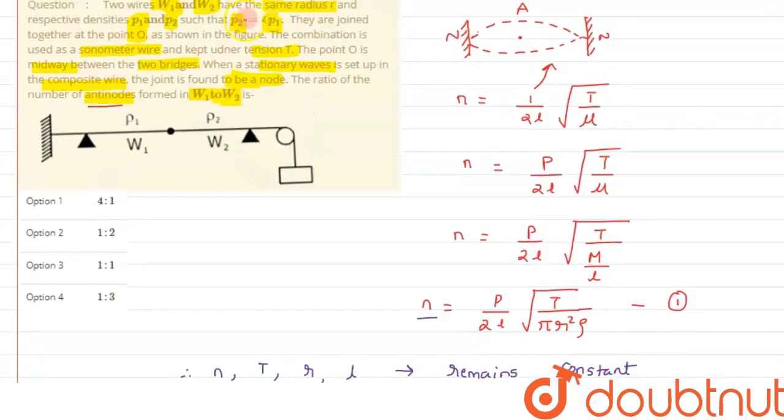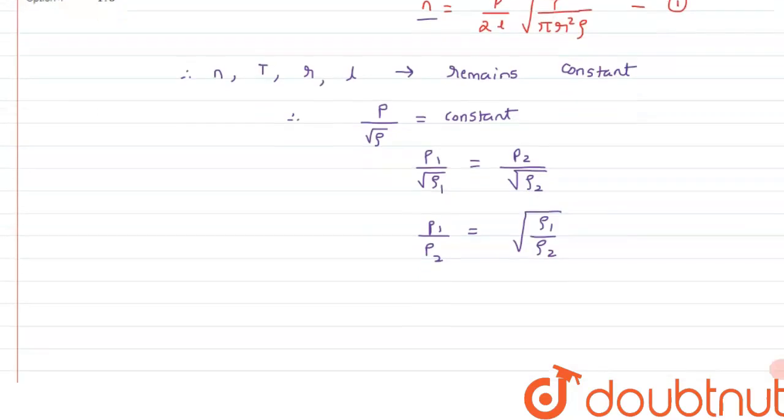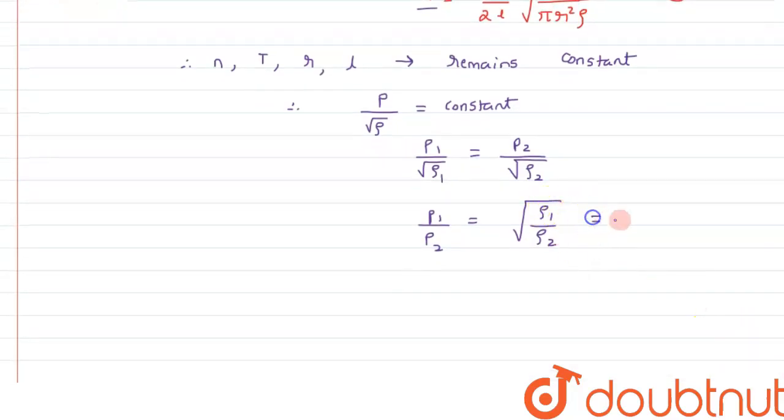So we can write here it can be written as rho 1 upon four rho 1, or this comes out to be one by two.